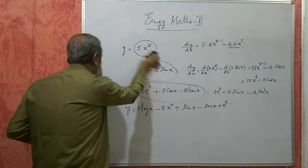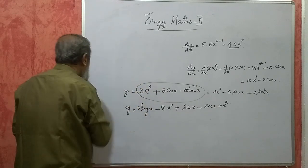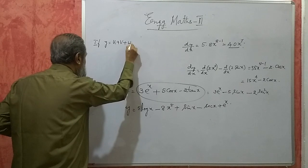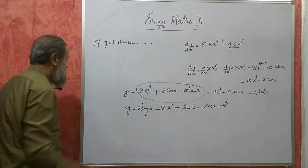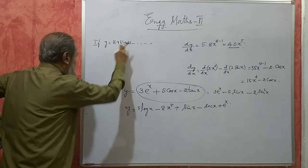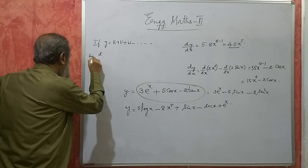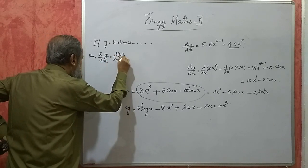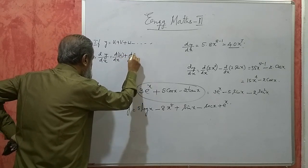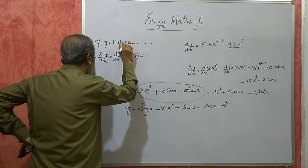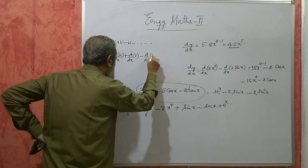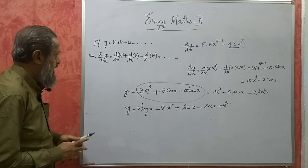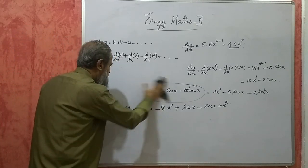In general, if y is equal to u plus v plus w, etc., with any number of terms, and if all these are functions of x, then dy/dx will be equal to d/dx of u, plus or minus d/dx of v, plus or minus d/dx of w, and so on. This is the first rule of differentiation. It holds good for any number of terms.